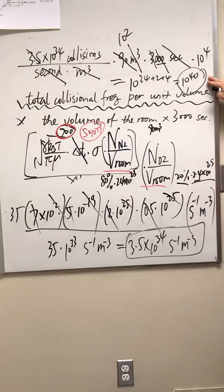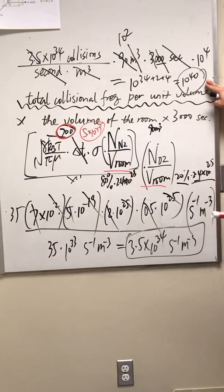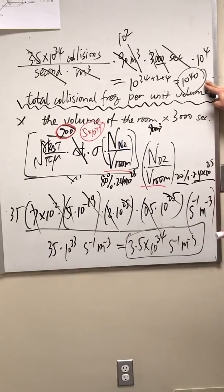The total number of collisions between O2 molecules and N2 molecules inside a typical lecture room at Central Washington University within a 50-minute period is 10 to the power of 40.